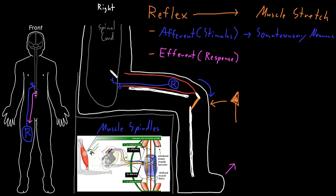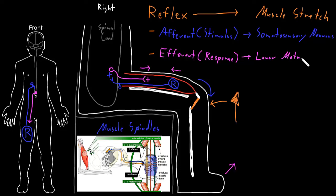Inside the central nervous system, here in the spinal cord, these somatosensory neurons carrying muscle stretch information are going to form an excitatory synapse with another neuron whose soma is in the central nervous system. This neuron sends an axon out through nerves of the peripheral nervous system back to the same muscle that was stretched, and synapses on and excites skeletal muscle cells in that same muscle, causing the muscle to contract — causing the response. The neurons that synapse on and control skeletal muscle cells are lower motor neurons, and for the muscle stretch reflex, the lower motor neurons make up the efferent part of the reflex.